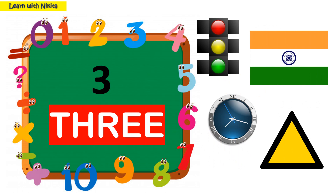This is number 3 and its number name is THREE. Let's see examples related to this: three colors in a red light, three colors in the Indian flag, three needles of the clock, and three sides of a triangle.